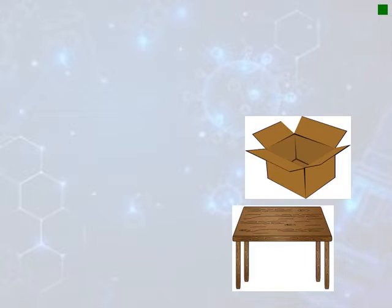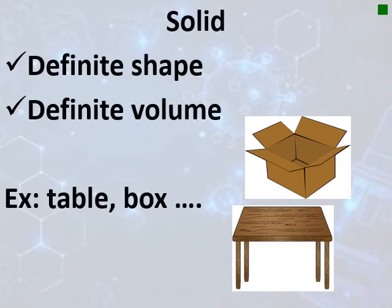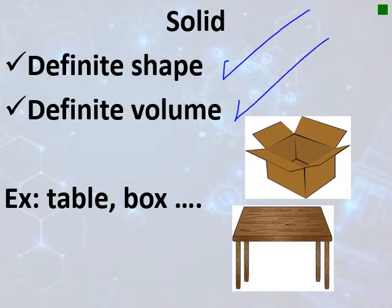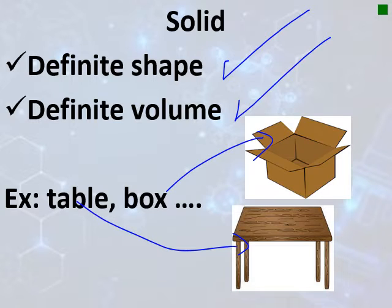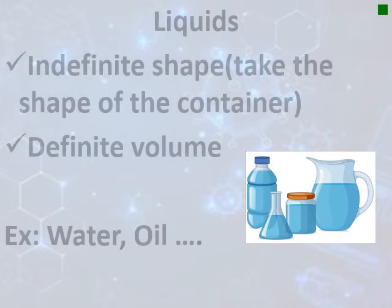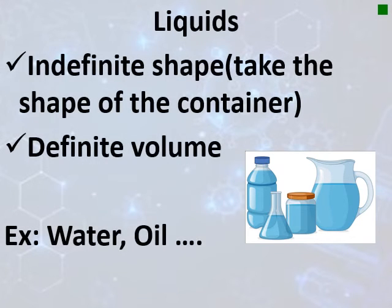Let's start first with solids. Solids have a definite shape and definite volume. Examples include a table, box, chair, board marker, and pen. Liquids have an indefinite shape.